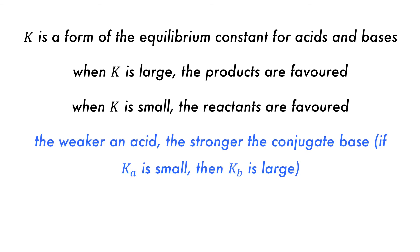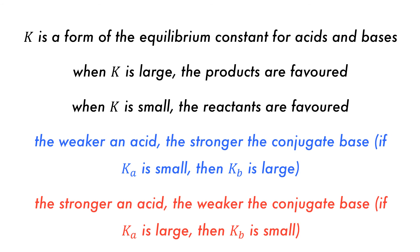For a weak acid with a small Ka, it will have a strong conjugate base with a large Kb value, and the opposite is true, as when Ka is large, Kb will be small.